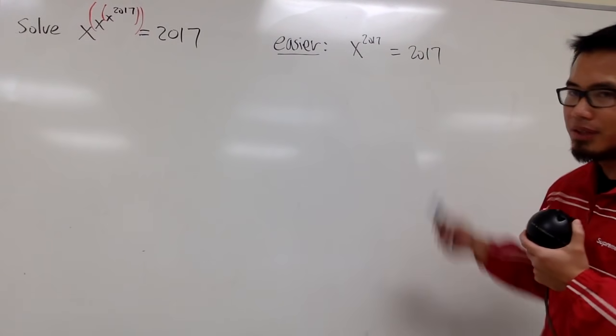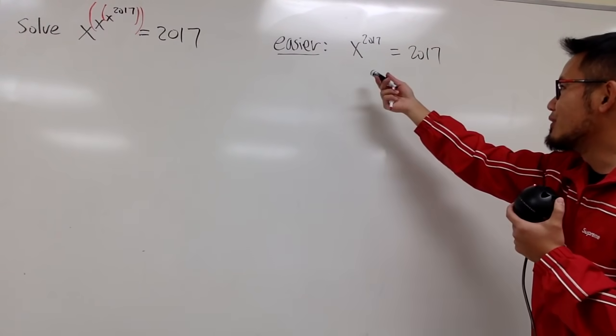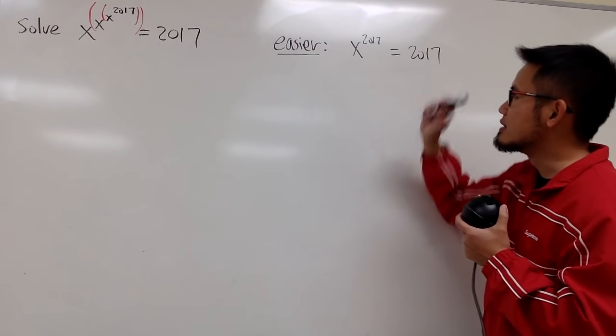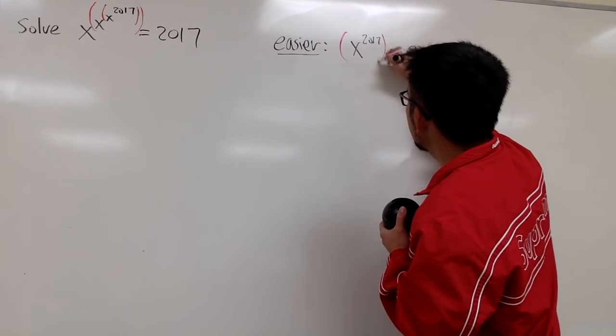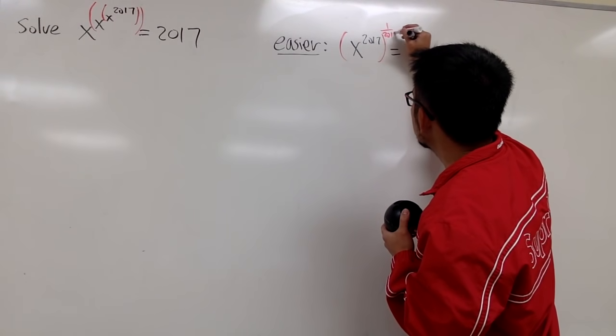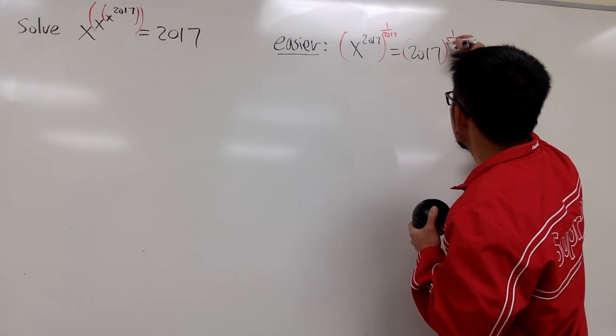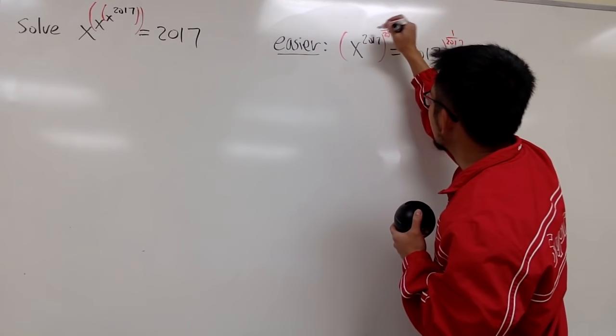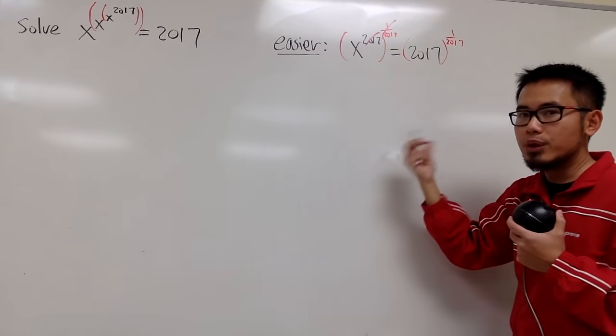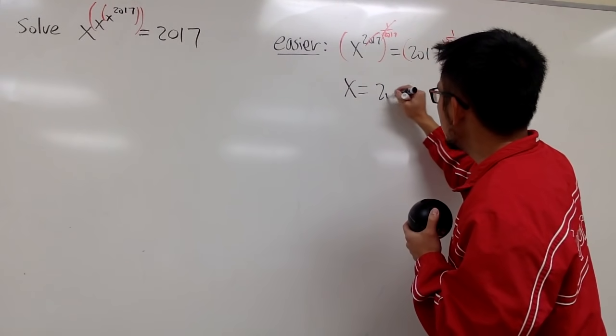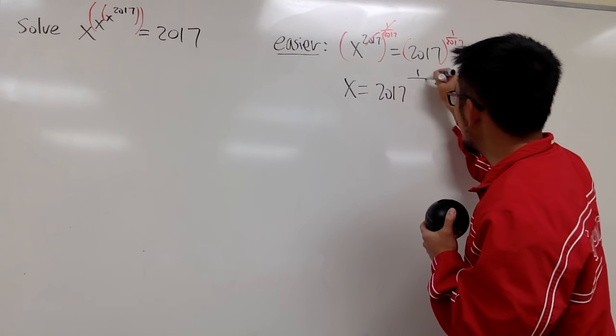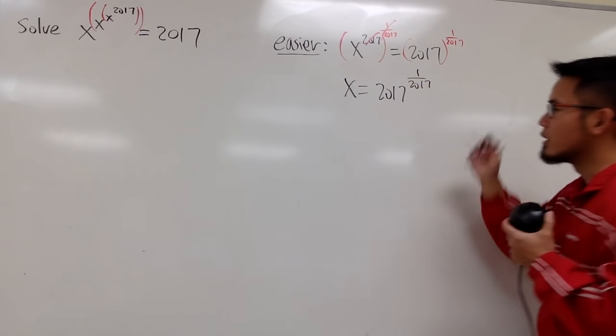And how can we solve this now? In fact, we don't even need to use ln, because x is the base and the power is just 2017. So we can just go ahead, raise both sides to the 1 over 2017th power, because this way, this and that will cancel each other out, and we'll get the x by itself. So we will have x equals 2017 raised to the 1 over 2017th power.